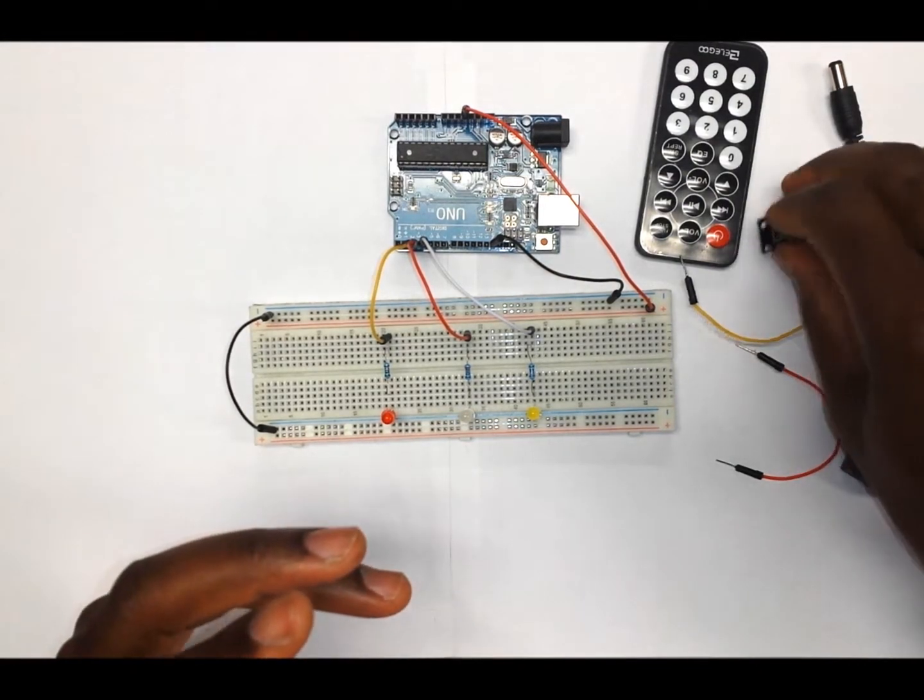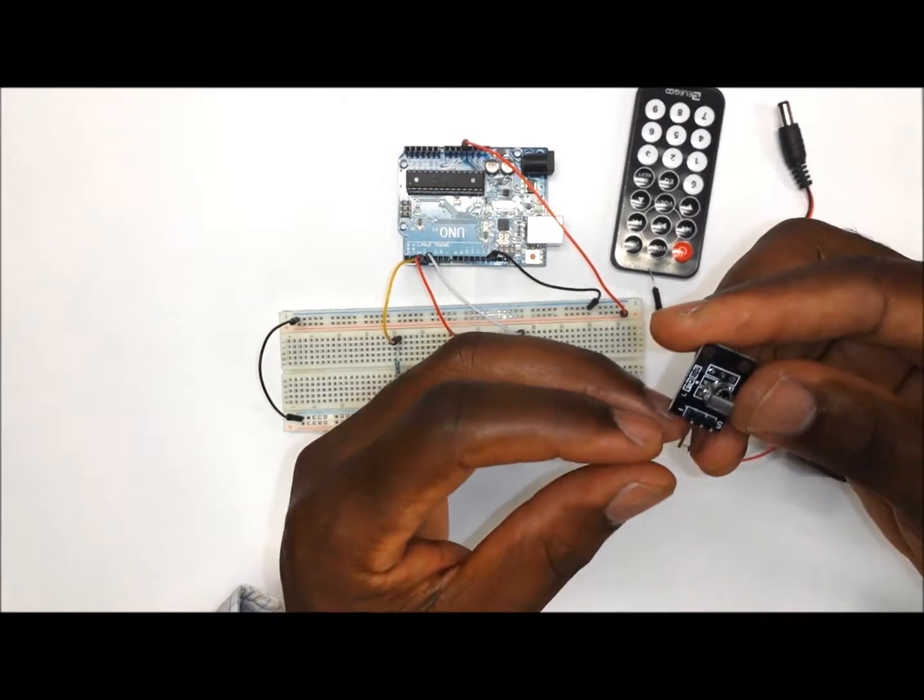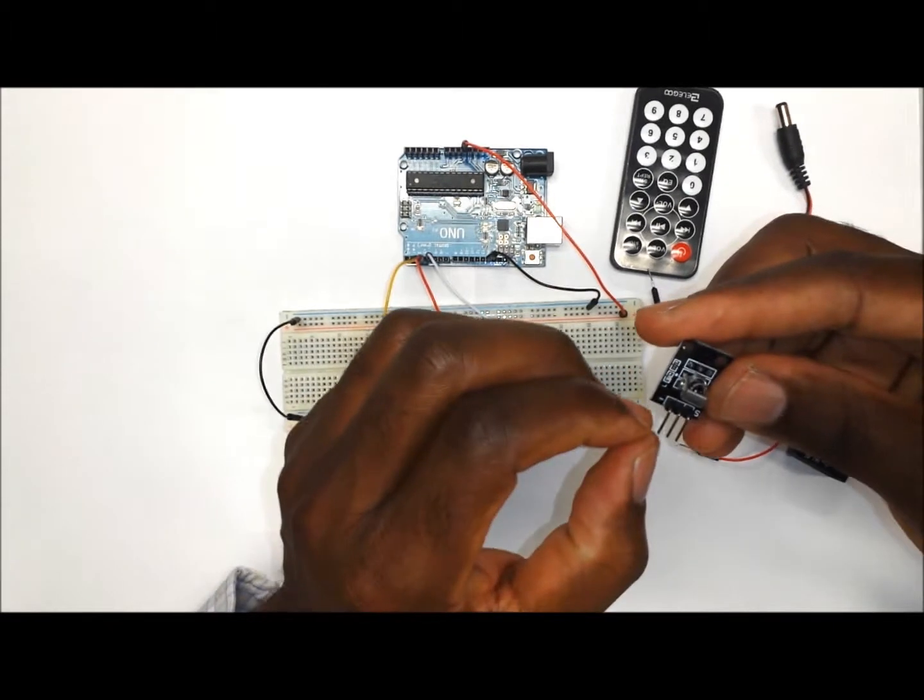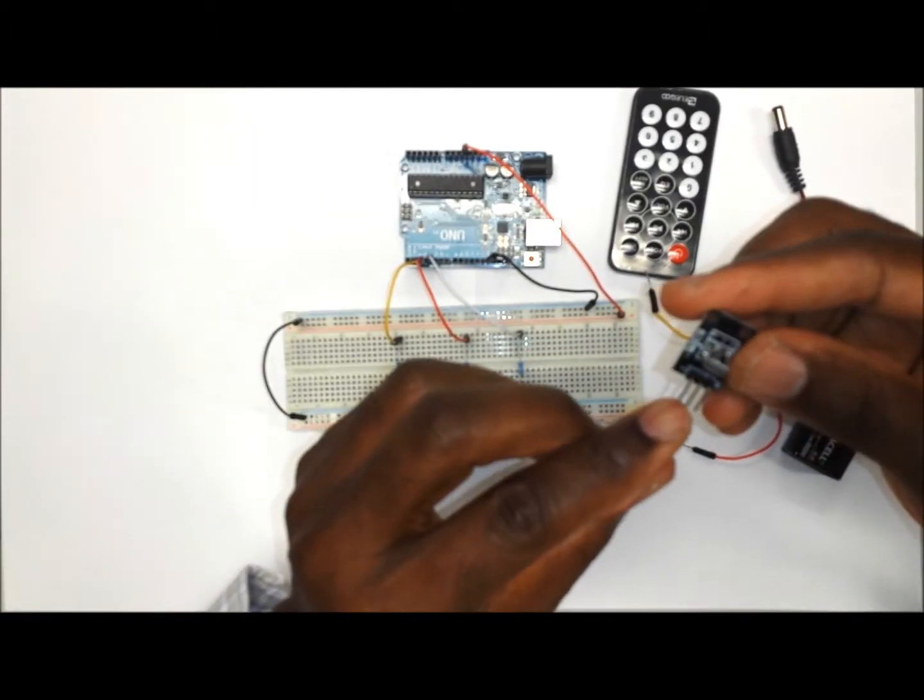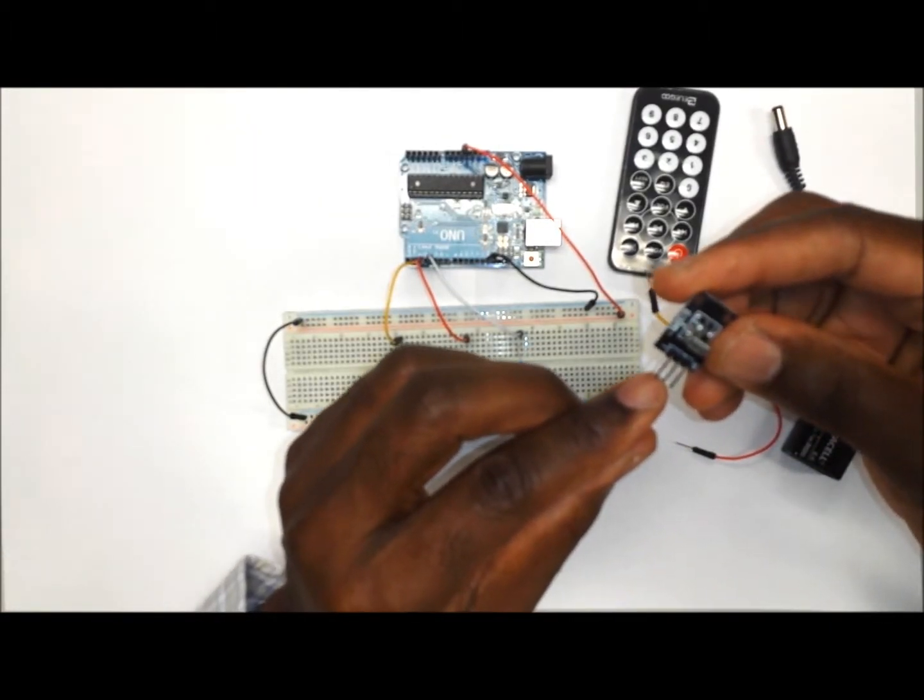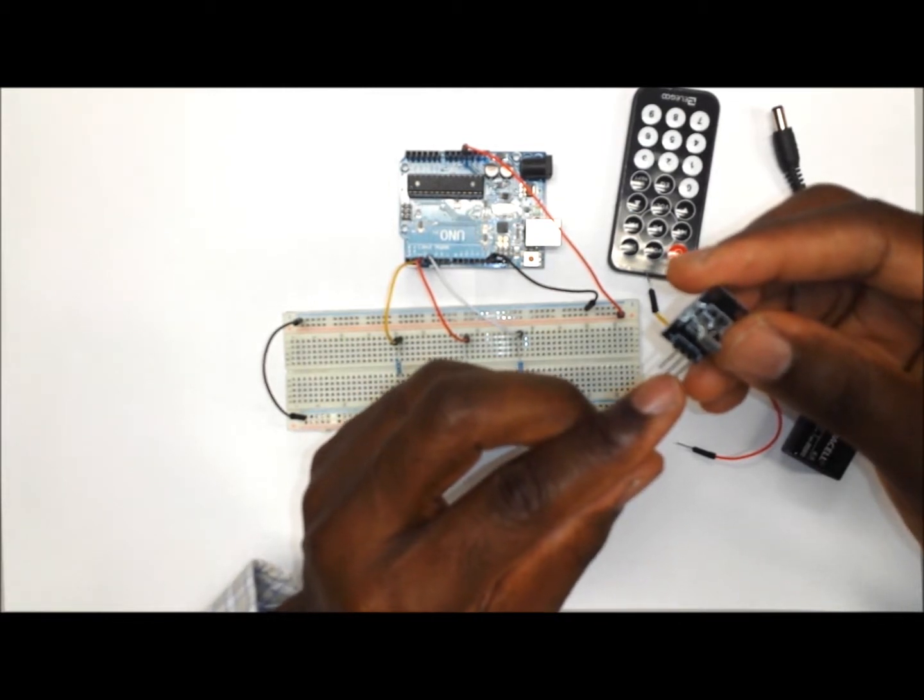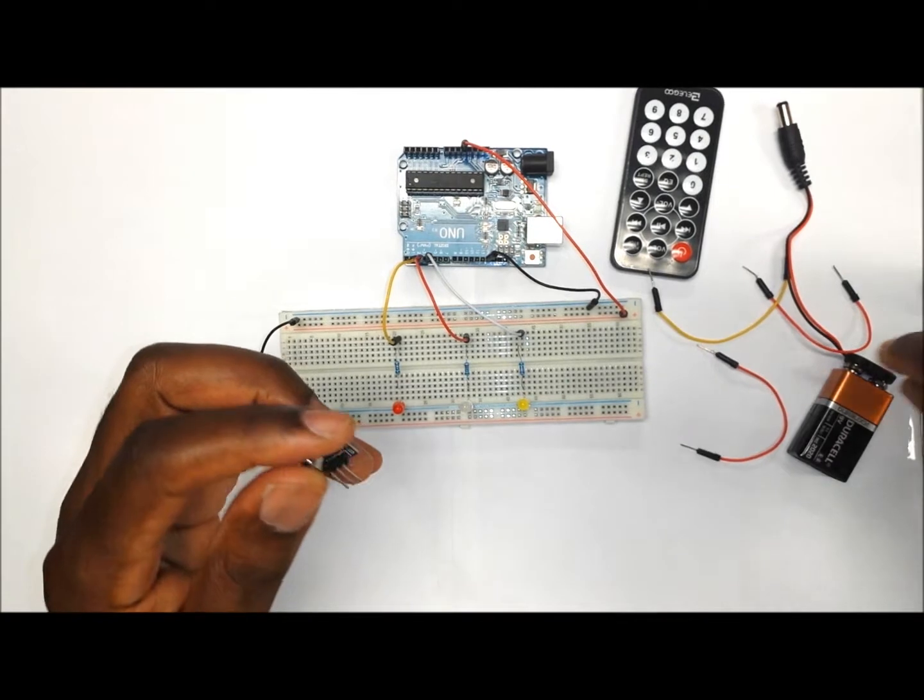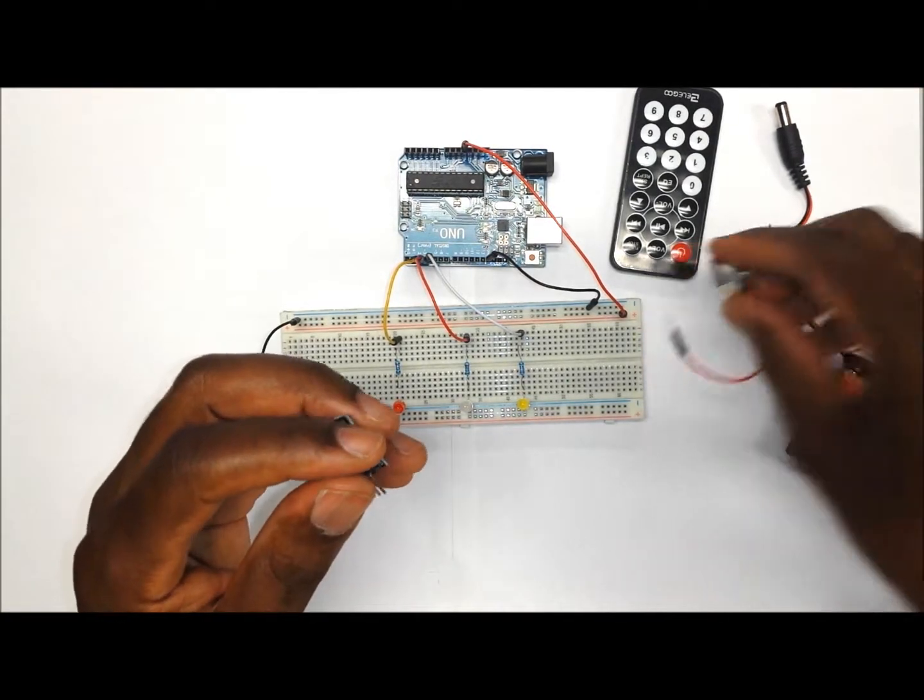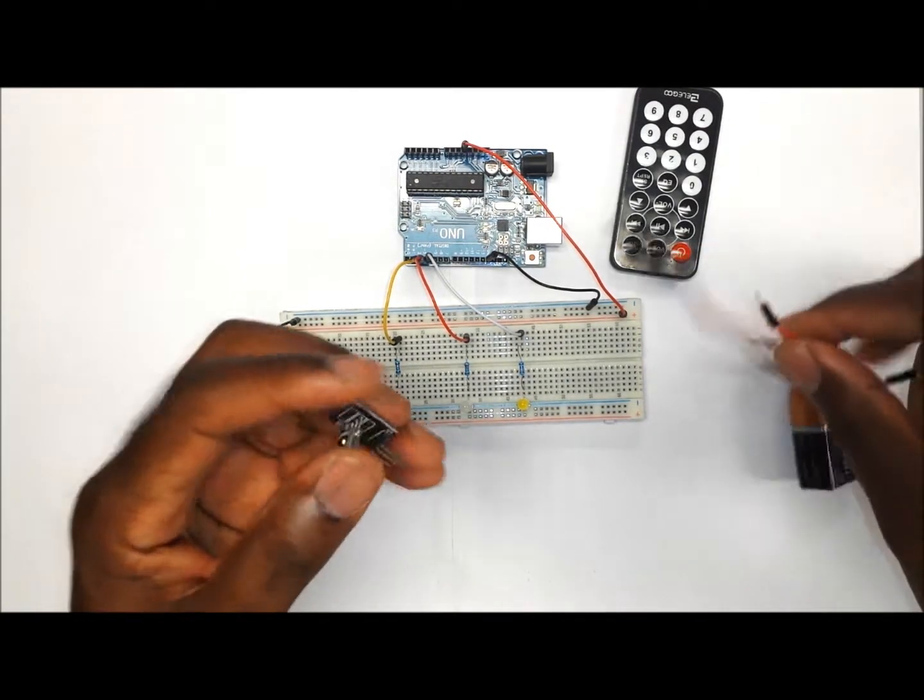Now we are going to wire in the IR receiver. If you notice the IR receiver has got three pins. The first pin is the ground. The middle pin is going to be the power pin. And the outside pin will be the signal pin. So what we want to do is make sure that we have the three pins wired properly.